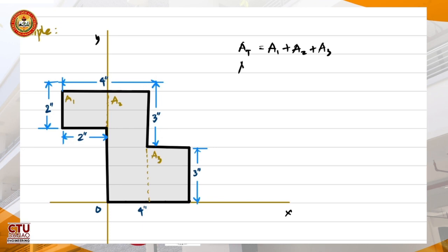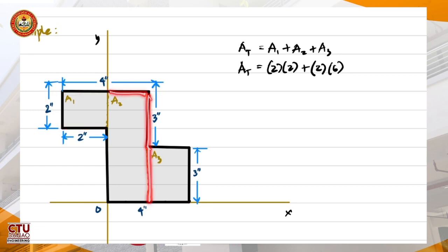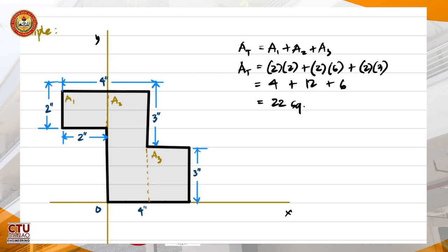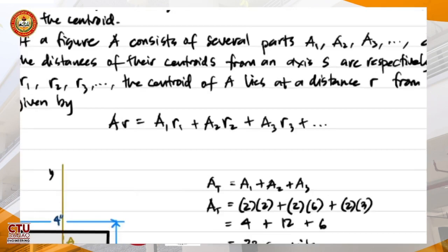Area one is 2×2. Area two is 2×6 — this dimension is 4, this is 2, so this side is 2 and this is 3, making it 2×6. Area three is 2×3. Therefore the total area is 4 + 12 + 6 = 22 square units.